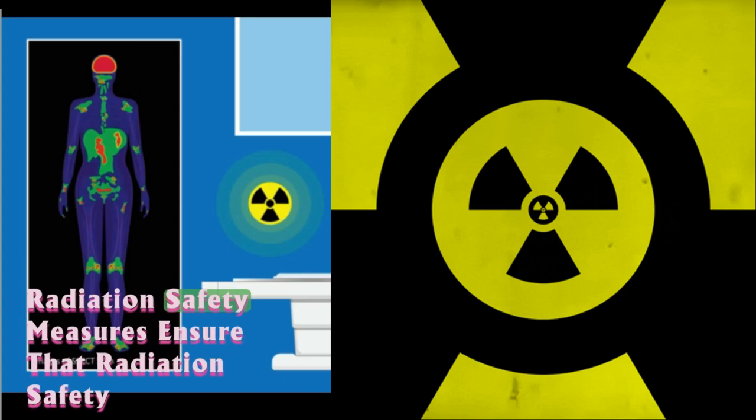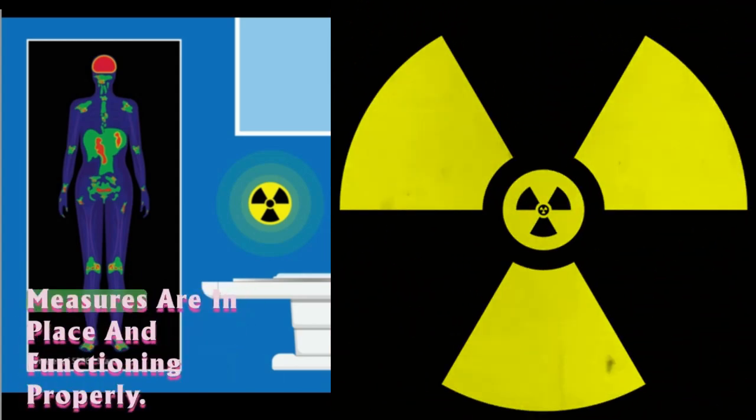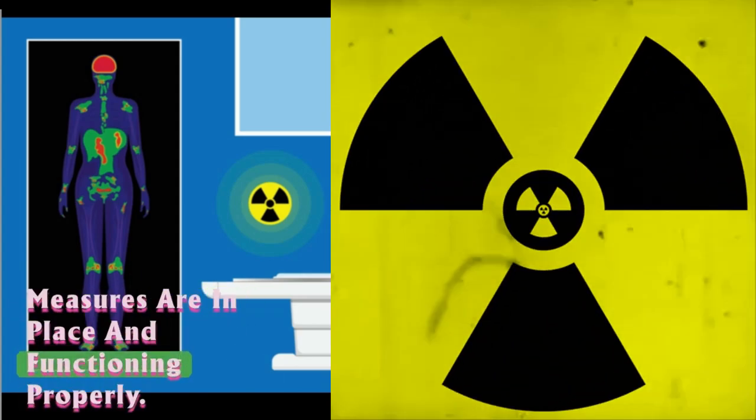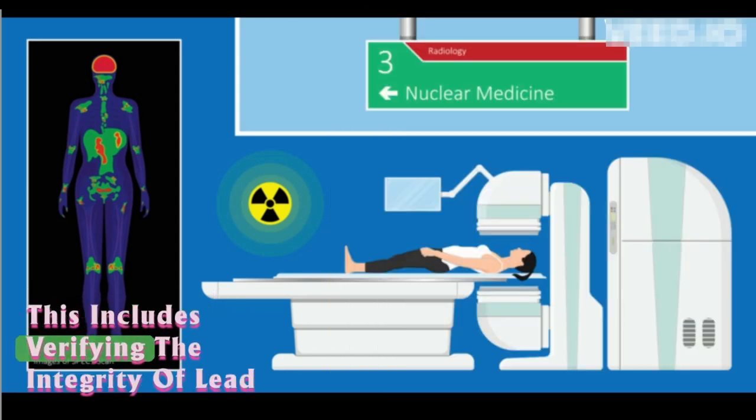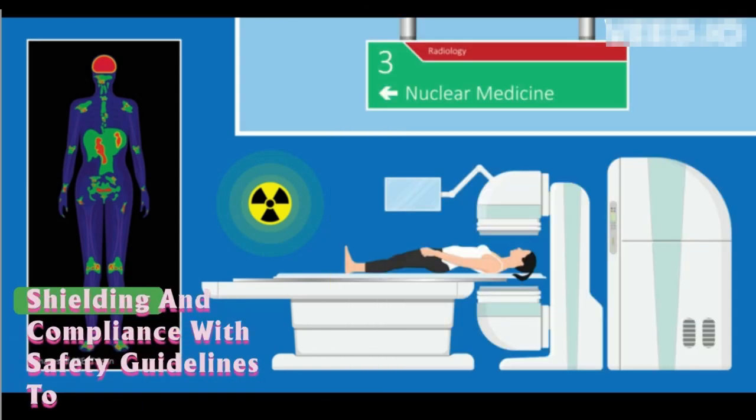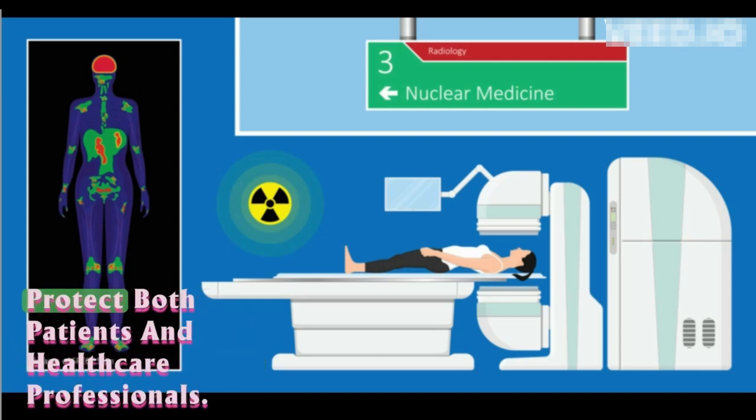Radiation safety measures: Ensure that radiation safety measures are in place and functioning properly. This includes verifying the integrity of lead shielding and compliance with safety guidelines to protect both patients and healthcare professionals.